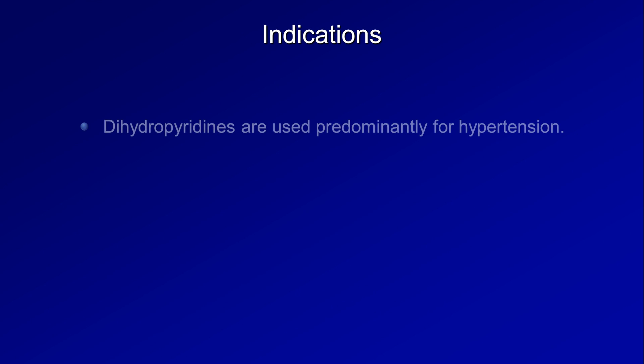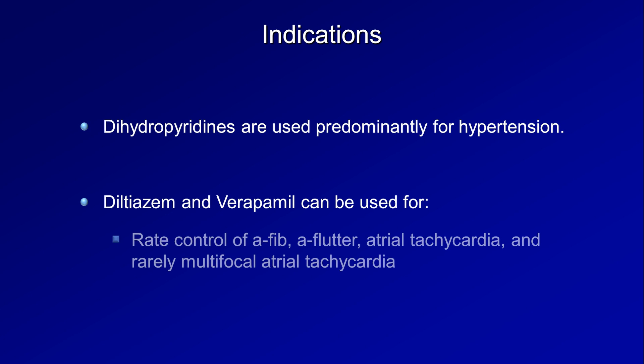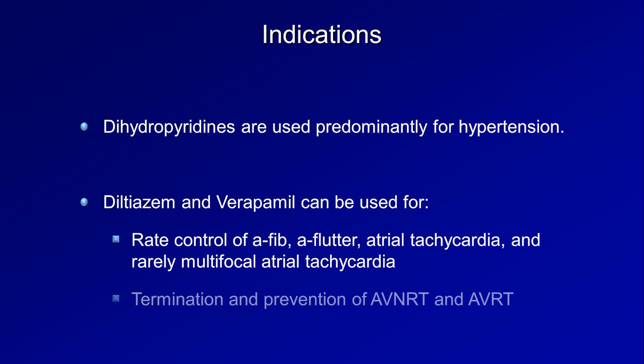Regarding indications, the dihydropyridines are used predominantly for hypertension. Diltiazem and verapamil can be used for rate control of AFib, AFlutter, atrial tachycardia, and rarely multifocal atrial tachycardia. They can also be used for the termination and prevention of AVNRT and AVRT.